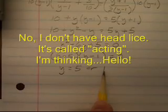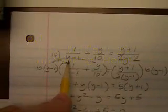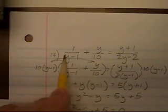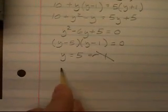If y is 1, then in the original equation, we will get 1 minus 1 or 0 in the denominator. This 1 is what's known as an extraneous solution. So there is only one answer to this equation, y is equal to 5.